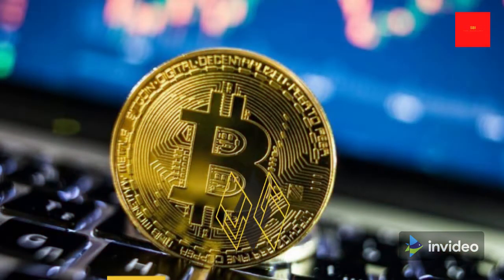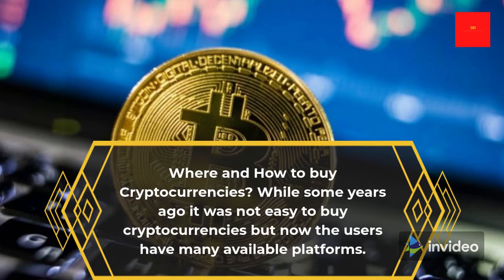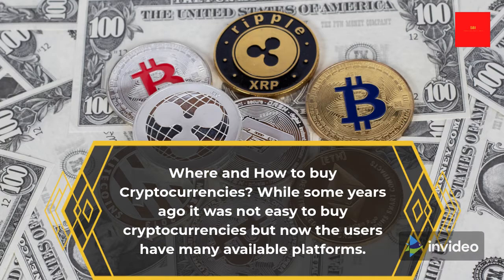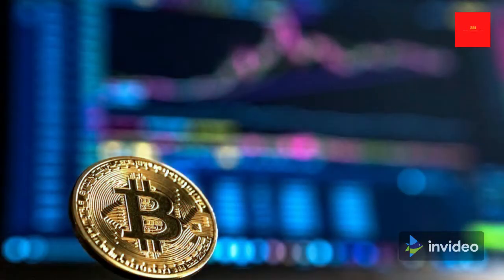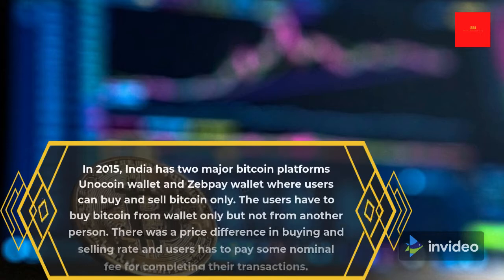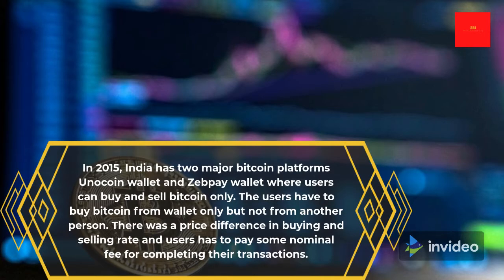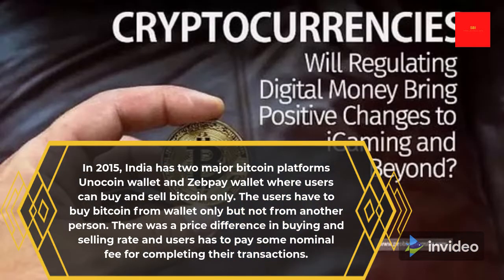Where and how to buy cryptocurrencies: While some years ago it was not easy to buy cryptocurrencies, now users have many available platforms. In 2015, India had two major Bitcoin platforms — Unocoin Wallet and Zebpay Wallet — where users could buy and sell Bitcoin only. Users had to buy Bitcoin from the wallet and not from another person, and there was a price difference in buying and selling rates along with a nominal transaction fee.